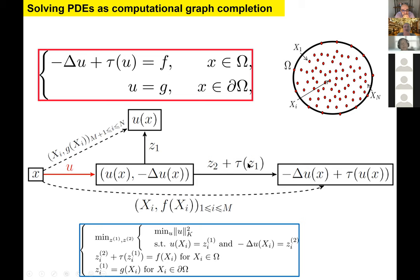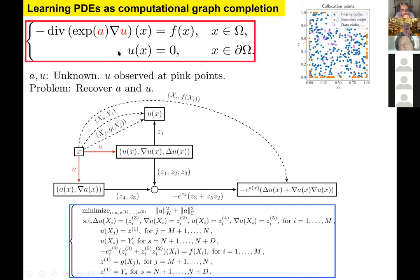The proposed approach can be expressed as replacing the unknown function u in the graph by a Gaussian process with kernel K and computing its MAP estimator given the data — where the data corresponds to observations of the right-hand side at interior collocation points and solution values at boundary points. For the joint forward-inverse problem with unknown coefficient a, both u and a are replaced by independent GPs and their MAP estimators are computed from the data.